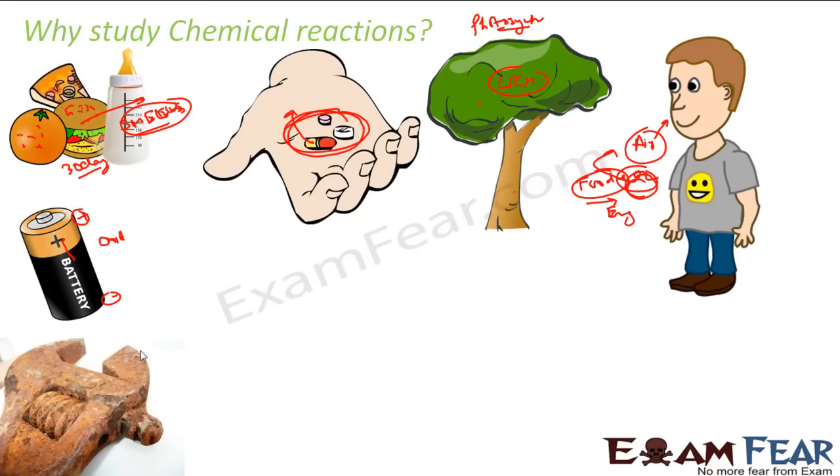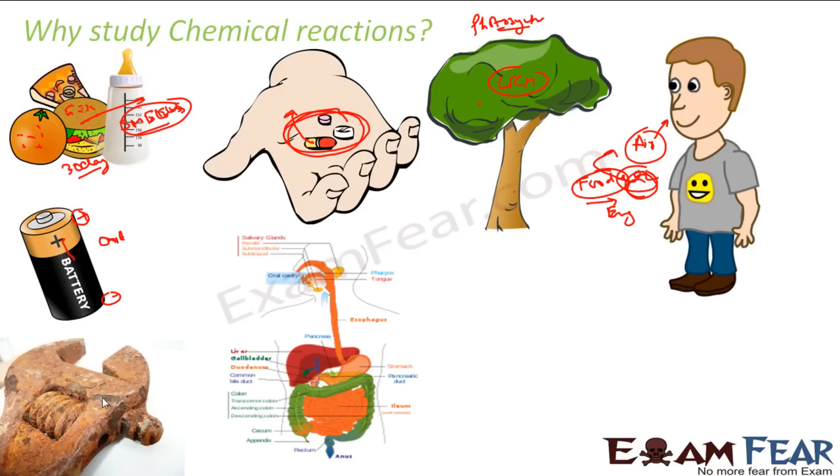If you see the iron, iron thing you have, after some time it gets rust and this rusting is nothing but a reaction. So we have iron, iron reacts with oxygen and it produces the rust. If you have any iron substance you keep outside your home for 10-20 days, you will see that thing got rust. So this is also one chemical reaction that happens.